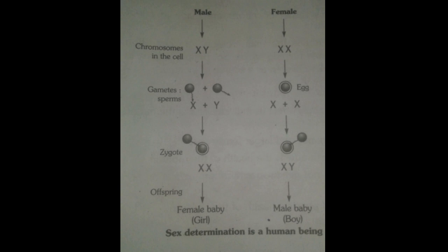But when a sperm carrying a Y chromosome meets with the X chromosome of the egg, then after fusion the resulting zygote will have sex chromosomes of type X and Y. So the developing fetus is a male embryo, because that will give birth to a male baby.